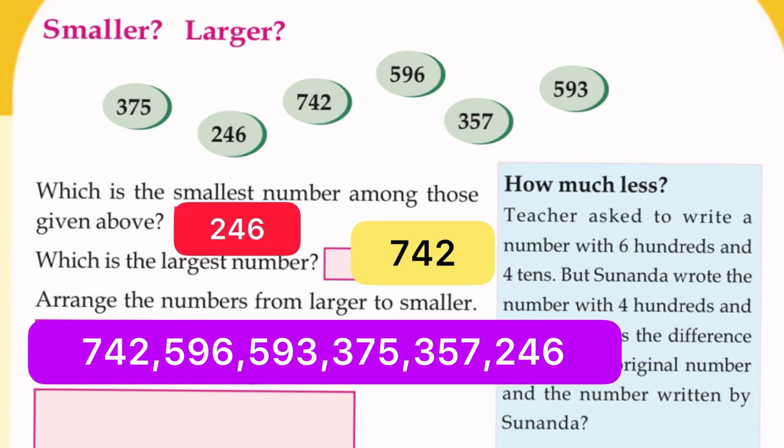We can write the biggest number or the largest number first and the smallest number last. So the numbers are: 742, 596, 593, 375, 357, and 246.